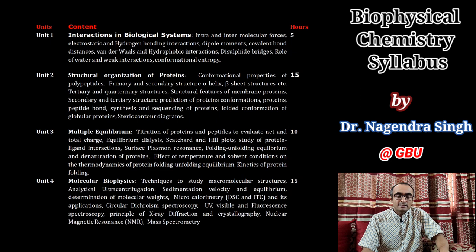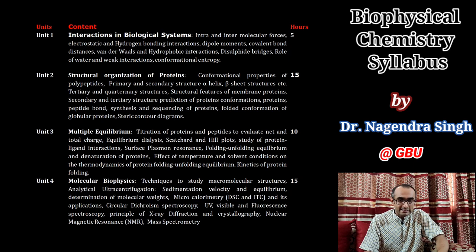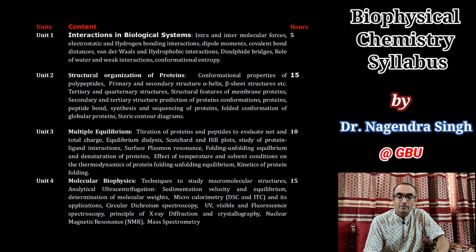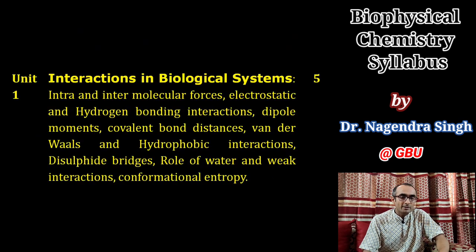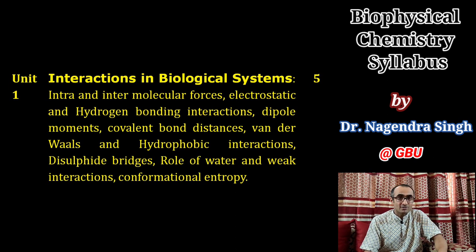The course content has been divided into four units. Unit 1 will be covered in approximately 5 hours; Units 2 and 4 will be 15 hours each; and Unit 3 will cover 10 hours — these are minimum approximate hours. In Unit 1, we'll discuss interactions in biological systems: all the major forces responsible for the stability of macromolecular structures.